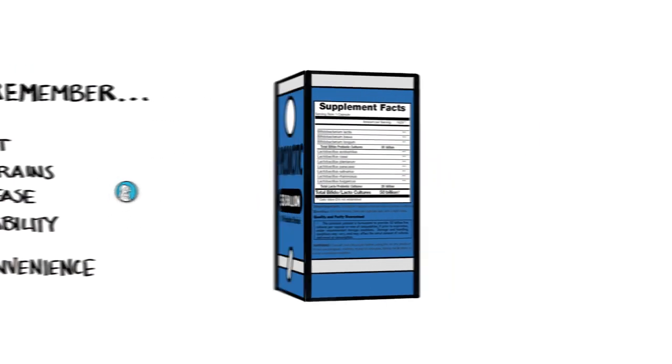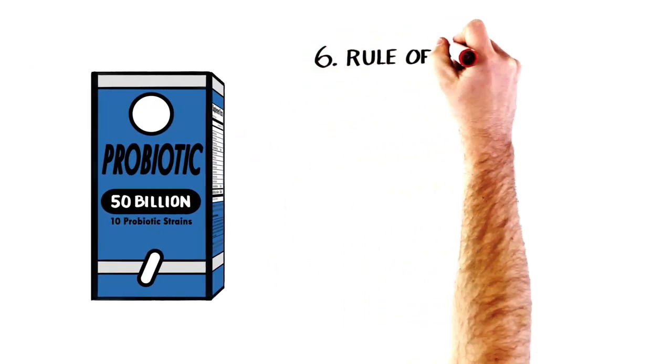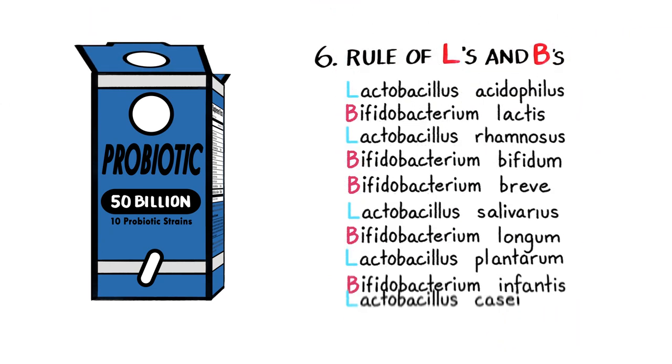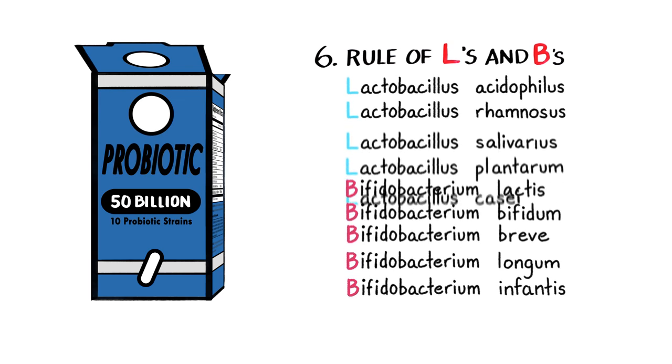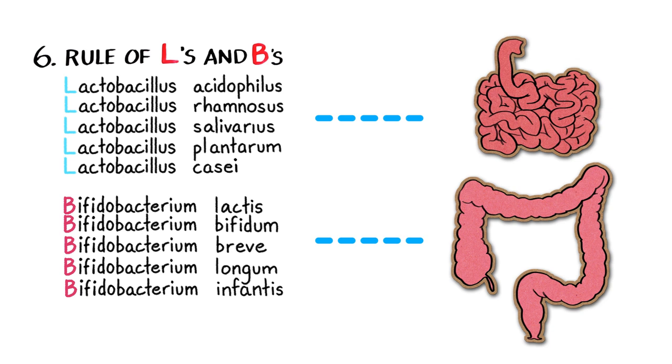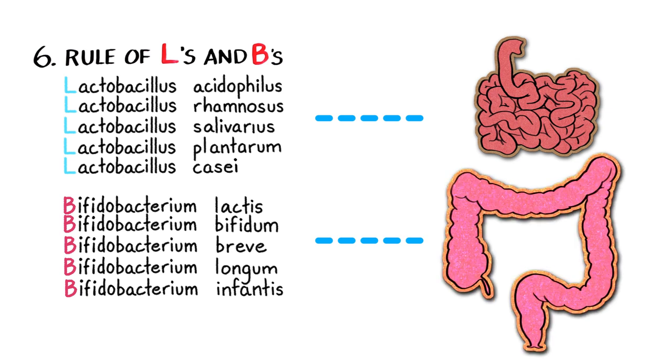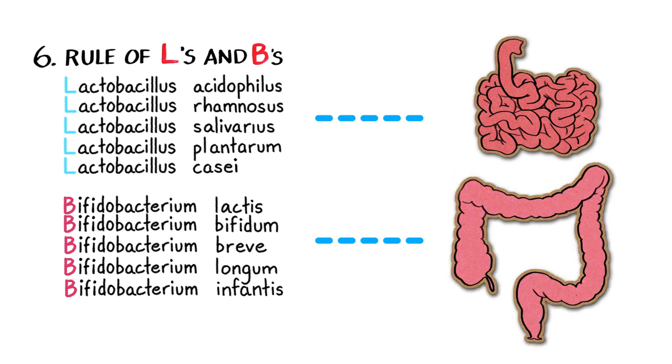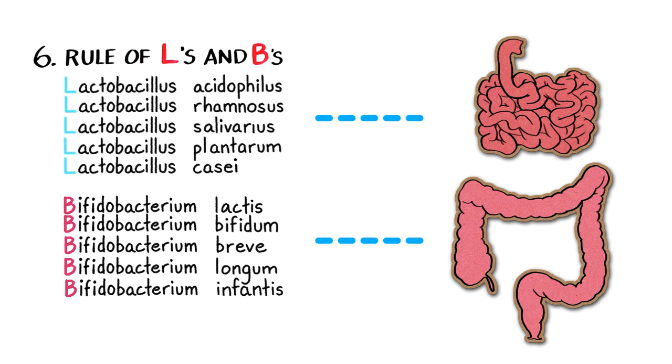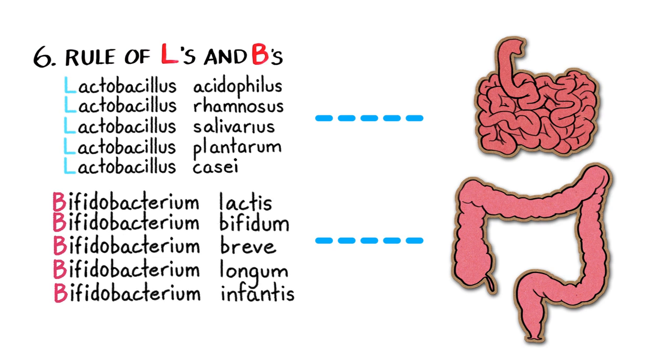Well, in studying about probiotics, I've learned it's important to consider that different strains of probiotics benefit specific parts of the digestive tract more than others. Lactobacillus strains work best in the small intestine and bifidobacterium work best in the large intestine. So, the sixth rule is to look for a multi-strain probiotic with lots of L's for the small or little intestine and lots of B's for the large or big intestine.